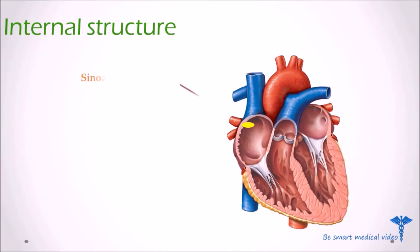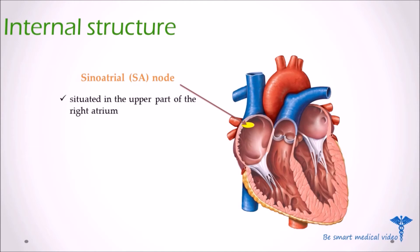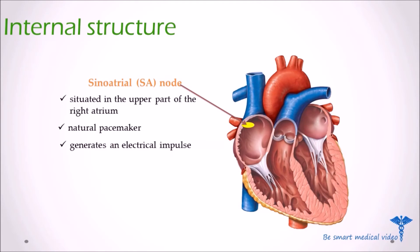Next is the sinoatrial node, or SA node. The SA node is situated in the upper part of the wall of the right atrium. It is the natural pacemaker of the heart and is made up of a specialized bundle of neurons. It spontaneously generates an electrical impulse.